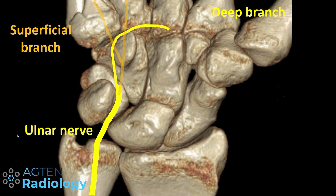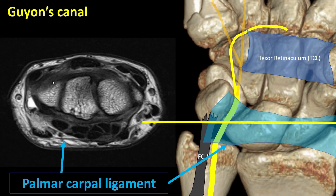The ulnar nerve comes in on the ulnar side of the wrist, hence the name. It goes around the radial aspect of the os pisiforme, then divides into a superficial branch and the deep branch of the ulnar nerve, which goes to the depth of the wrist on the ulnar aspect of the hook of the hamate and then courses radially again. The superficial branch is a sensory branch, the deep branch is a motor branch. The nerve goes through Guyon's canal, which is relevant anatomy here.